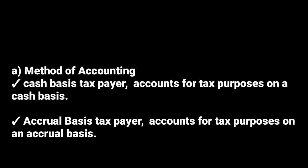A cash basis taxpayer is a taxpayer who accounts for tax purposes on a cash basis. To such a taxpayer, income is derived when it is received or made available, and an expenditure is incurred when it is paid. They consider an expenditure as incurred only after paying it.